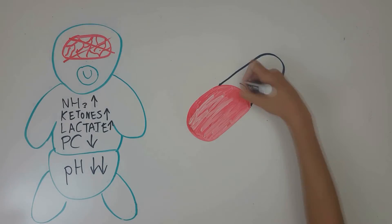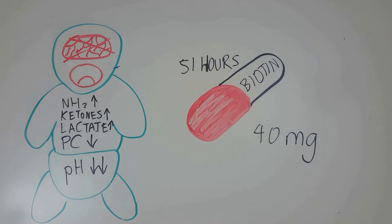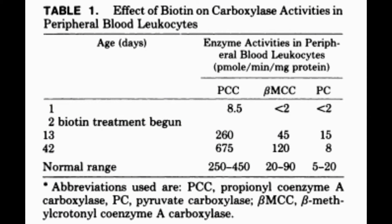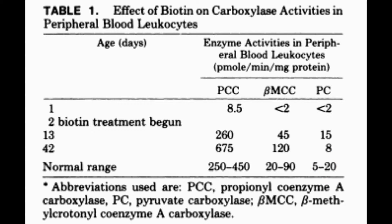The patient was supplemented with an initial dose of 40 mg of biotin at 51 hours of age, followed by 20 mg of biotin twice a day. After biotin treatment, the patient experienced a significant improvement in pyruvate carboxylase activity. Prior to treatment, pyruvate carboxylase activity in leukocytes was less than 2 picomoles per minute per mg protein, while normal activity level is around 5 to 20 picomoles per minute per mg protein. However, after 10 days of biotin treatment, pyruvate carboxylase activity increased and remained in normal range — around 15 picomoles per minute per mg protein at 13 days, and around 8 picomoles per minute per mg protein at 42 days.